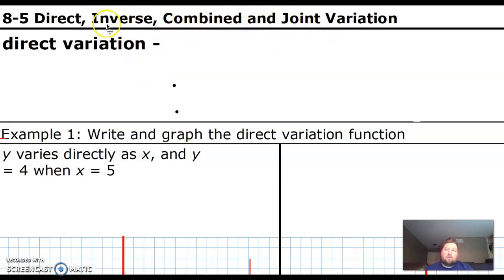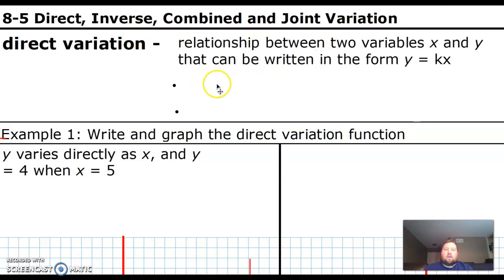We're going to review that real quick, and then we're going to talk about the other three types. Combined and joint will be brand new. You probably have seen a little bit of inverse, but that's actually why this is in this unit, because inverse is a rational function, which is what we've been learning how to graph recently. Just pause the video if you need to take some time to write these down.